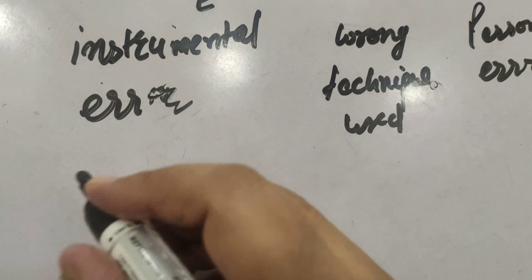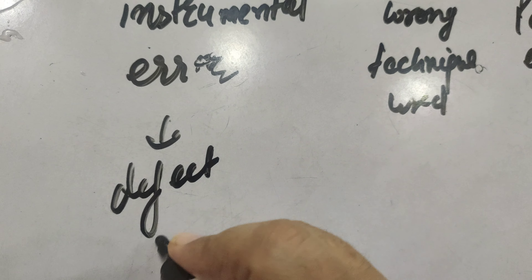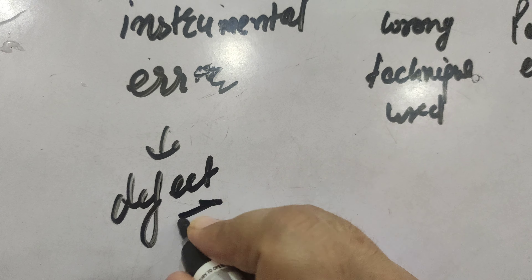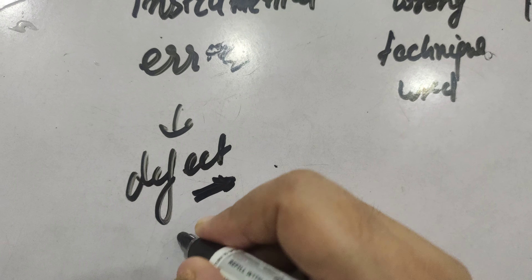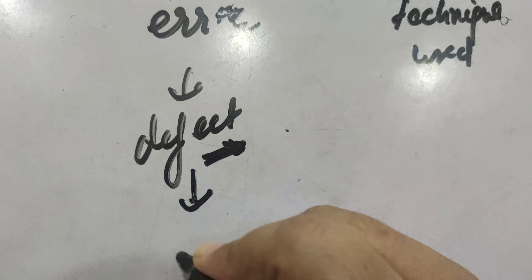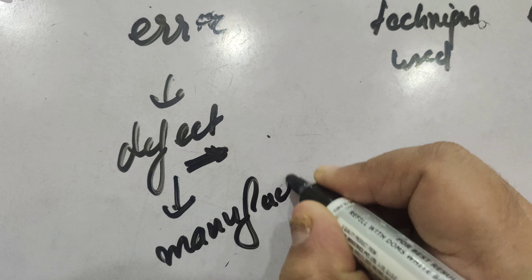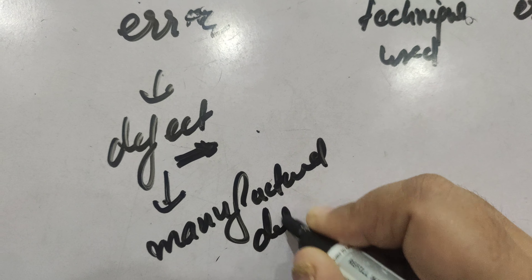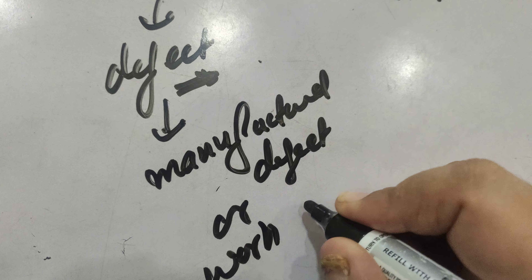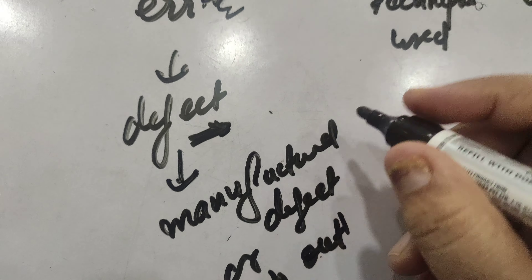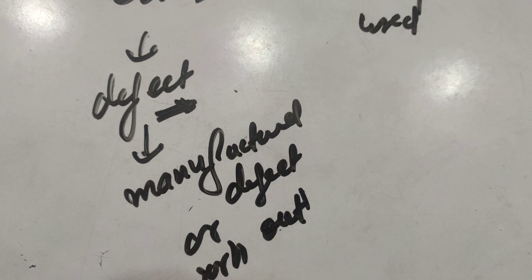Now let us discuss all these one by one. Instrumental error, as the name explains, is the error which can be due to a defect in the instrument — either the instrument has a manufacturing defect or it is worn out. Such kinds of errors are called instrumental errors.